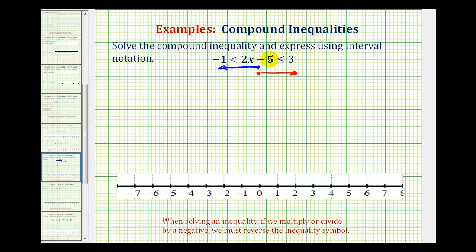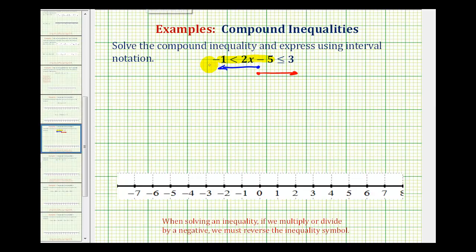Looking at this first inequality, we could write this as -1 is less than 2x - 5. But as you know, we like to have the variable on the left side. So we can change the order to read 2x - 5 is greater than -1.